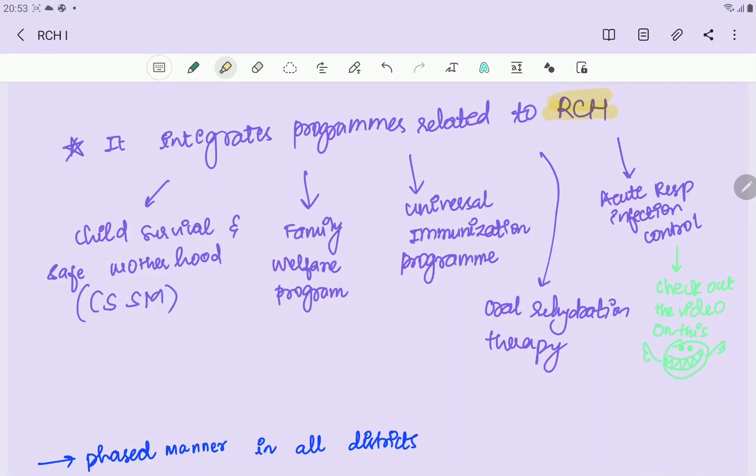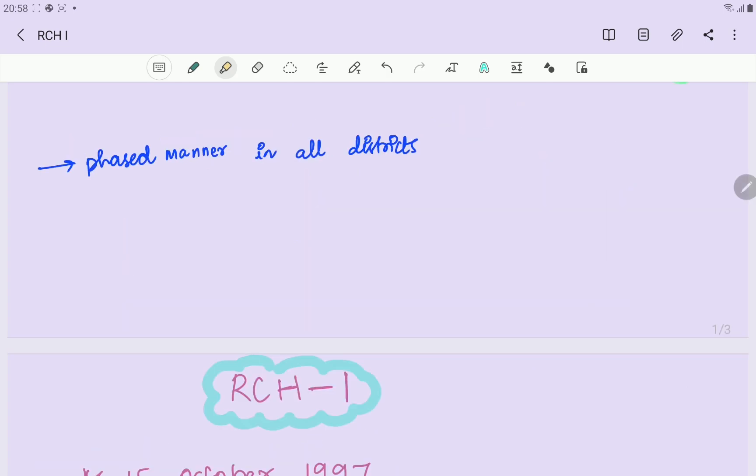RCH integrates everything related to every other program related to mom and child under its own umbrella. So RCH integrates child survival and safe motherhood programs, family welfare program, universal immunization program, oral rehabilitation therapy, acute respiratory infection - which comes under IMNCI. IMNCI means Integrated Management of Neonatal and Childhood Illness. It was introduced in selected states and districts in a phased manner to all districts.